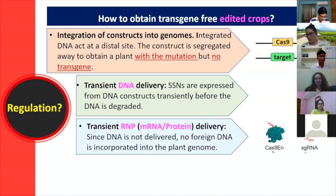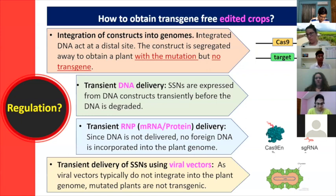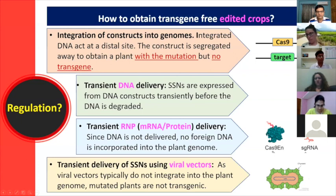You can also use RNP-mediated transformation — ribonucleoprotein delivery — where you purify the Cas9 protein, in vitro transcribe the guide RNA, mix them, and deliver them directly into the cell. No DNA is inserted; only protein and RNA, which will not integrate into the genome under normal circumstances. Additionally, Cas9 and guide RNA can be delivered via viral vectors, which typically do not integrate into the plant genome, so the resulting mutant plants will not be transgenic.